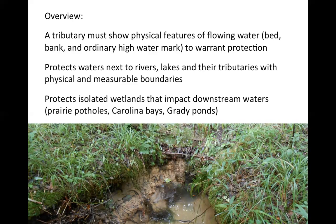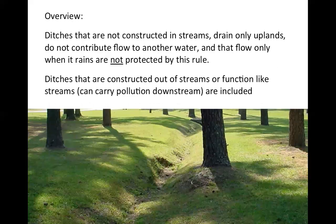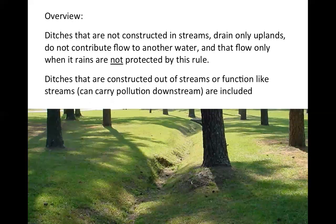This Clean Water Rule set boundaries and isolated special areas — special wetland areas like prairie potholes, Carolina Bays, and Grady Ponds would be included as protected. Ditches that were in the uplands and did not connect to a waterway were not part of this rule and were not considered a regulated stream. Ditches that did connect directly to water bodies and could potentially carry pollutants into a stream, river, bay, or lake were included as something to be managed so as not to degrade water systems.